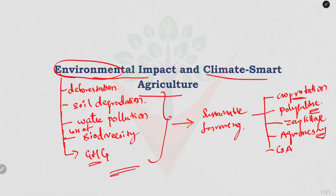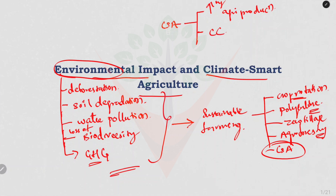Climate smart agriculture is also one of the sustainable farming methods, and it has three main goals. First is increasing agricultural production to ensure food security. Second is to adapt and build resilience to climate change, helping farmers cope with effects like drought, floods, and shifting growing seasons. Third is reducing greenhouse gas emissions.